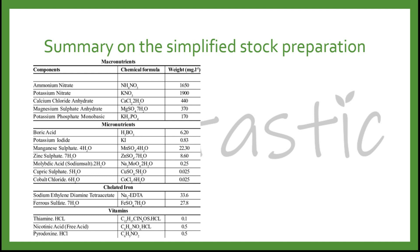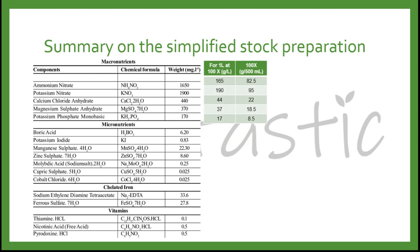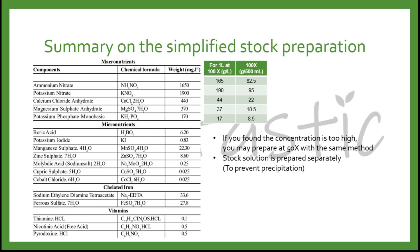Here is the summary of the simplified stock solution preparation. For ammonium nitrate, we need 1.65 g per liter; 1.9 g per liter for potassium nitrate; 0.44 g per liter for calcium chloride anhydride; 0.37 g per liter for magnesium sulfate anhydride; and 0.17 g per liter for potassium phosphate monobasic. To prepare 500 ml of each, you need 82.5 g ammonium nitrate, 95 g potassium nitrate, 22 g calcium chloride anhydride, 18.5 g magnesium sulfate anhydride, and 8.5 g potassium phosphate monobasic. If the concentration is too high, you may prepare at 50x using the same method. Stock solutions are prepared separately to prevent precipitation.